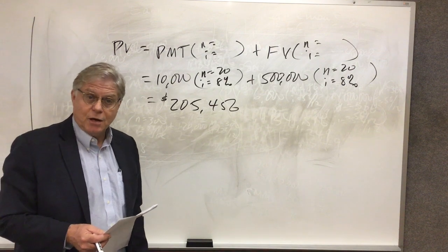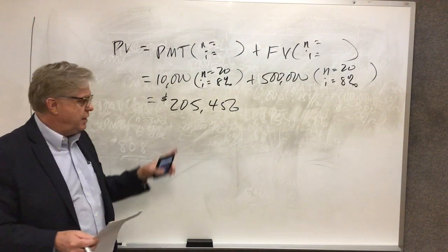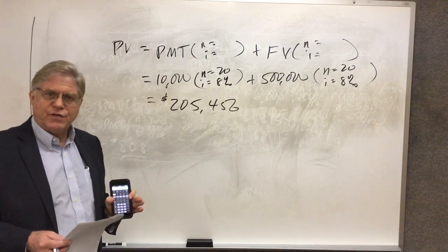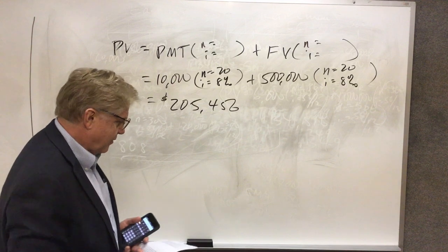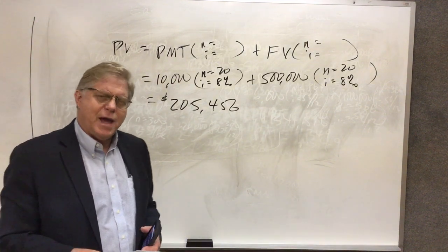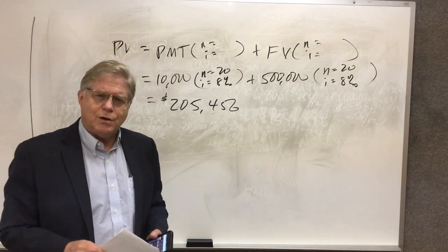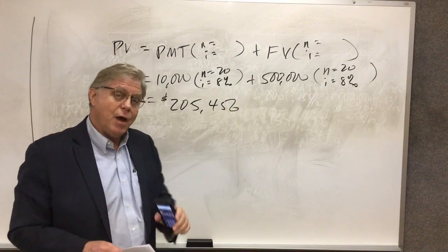She can either take this stream of payments, which is worth this amount to her, or she can take the $200,000 in cash. Well, she'll take this because it's greater. This scheme has a greater present value than the $200,000 today. Now sometimes somebody might say, well, maybe she needs the money really badly right now, so she might prefer to have that $200,000.